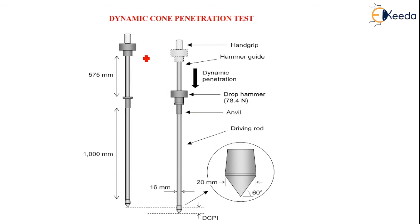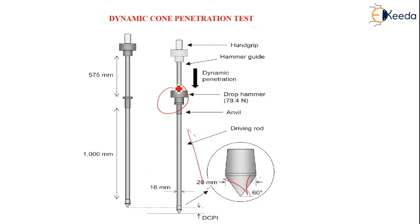This is how the Dynamic Cone Penetration Test looks: there is a 16 mm rod and a driving cone of 60 degrees with 20 mm diameter. The equipment parts are the anvil, the driving rod, the drop hammer, the hammer guide, and the hand grip for driving. Thank you.